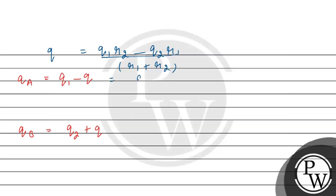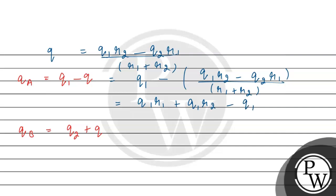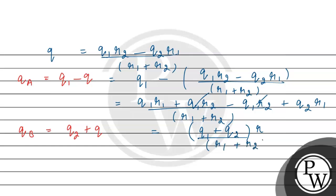Expanding: Q1·R2 minus Q·R2 equals Q2·R1 plus Q·R1. Rearranging: Q1·R2 minus Q2·R1 equals Q·(R1 + R2). So Q equals (Q1·R2 - Q2·R1)/(R1 + R2). Therefore QA equals Q1 minus Q, which simplifies to (Q1·R1 + Q1·R2 - Q1·R2 + Q2·R1)/(R1 + R2), giving QA equals (Q1 + Q2)·R1 divided by (R1 + R2).